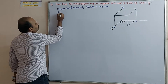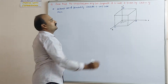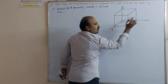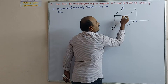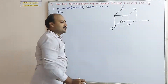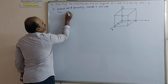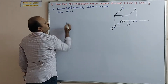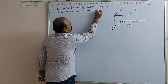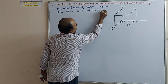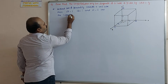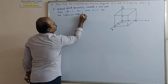Then the co-terminus edges are OA, OB, and OC. The vector along OA is i-bar, along OB is j-bar, and along OC is k-bar. These are the co-terminus edges. So OA-bar equals i-bar, OB-bar equals j-bar, and OC-bar equals k-bar.